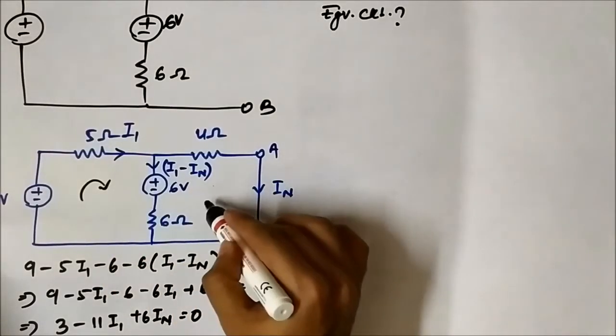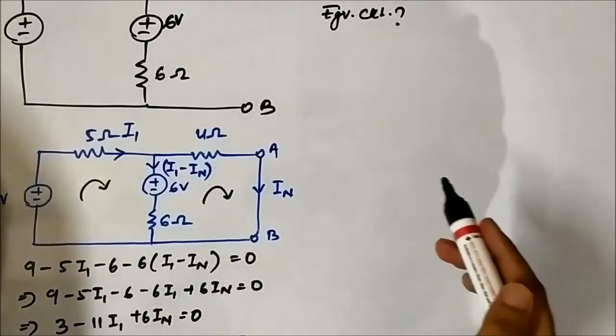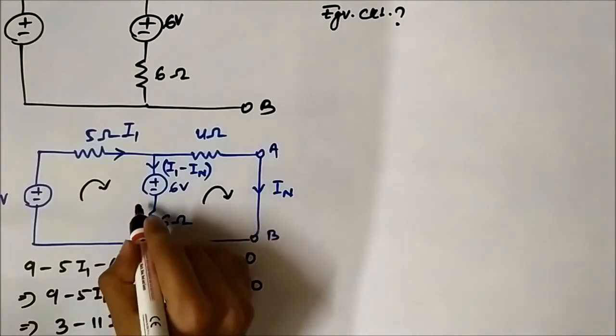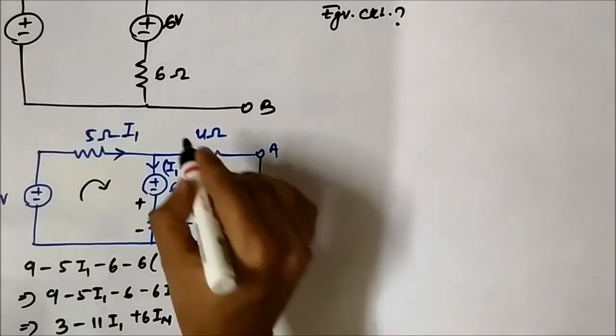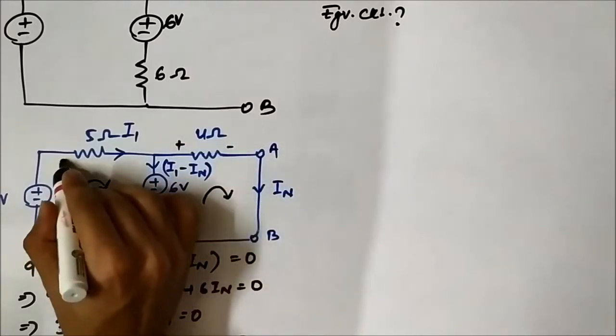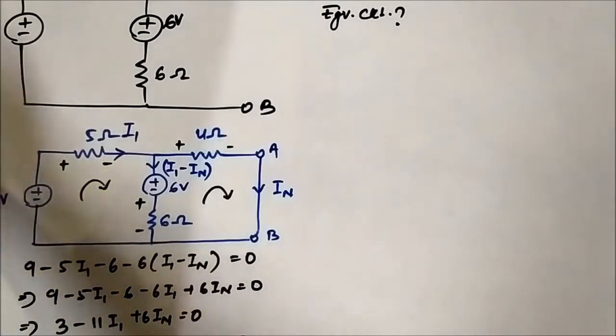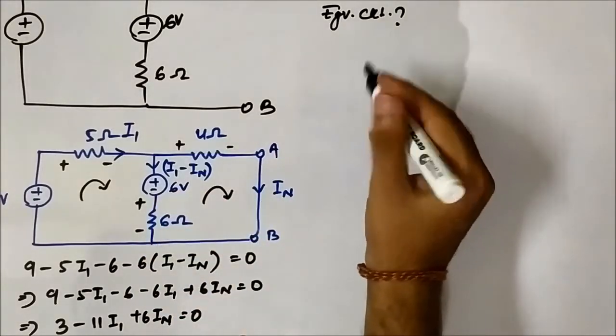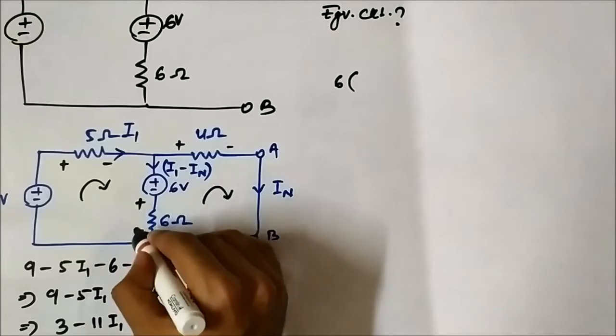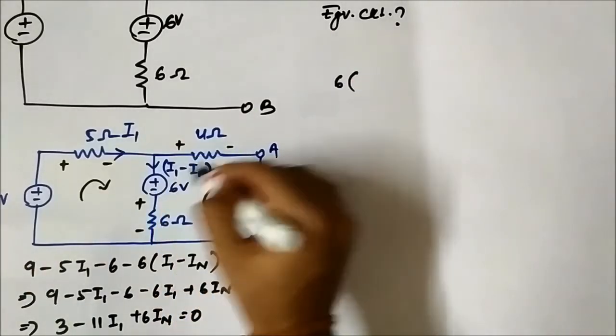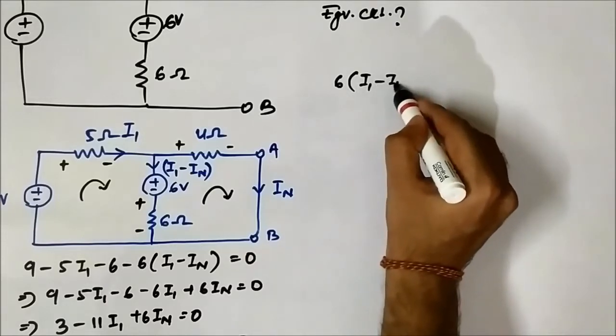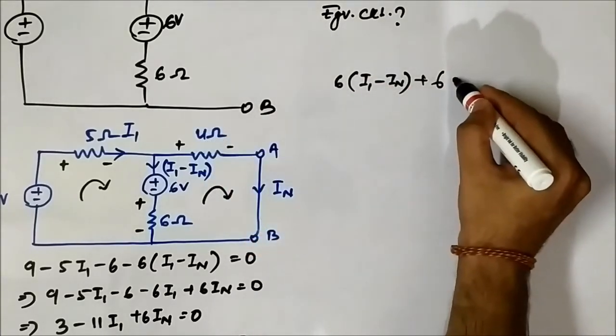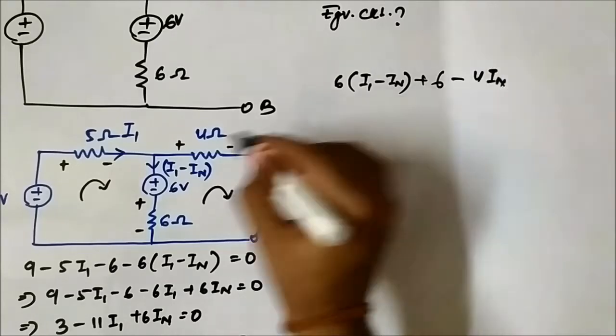Then we will apply KVL in this closed loop. The polarity is like this with respect to the current flow, so that we do not have any confusion. When we apply KVL we will have 6 into I1 minus In plus 6 volt minus 4 In.